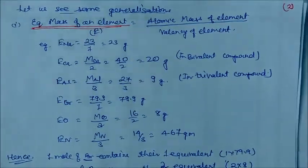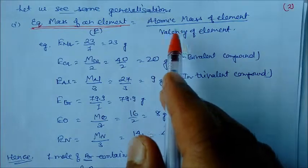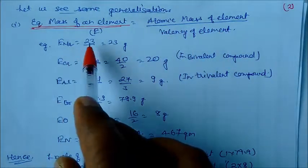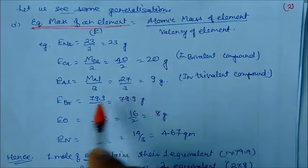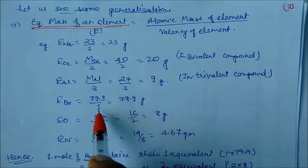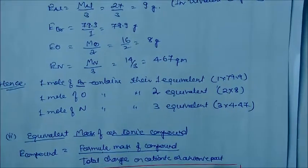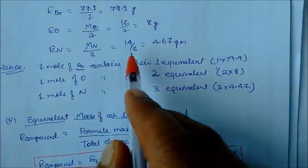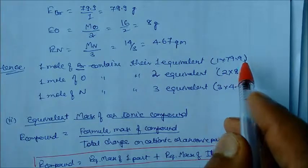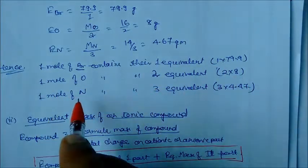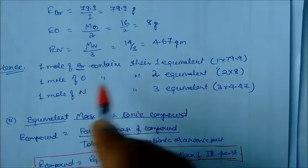For equivalent mass of elements: Bromine has molecular mass 79.9 with valency 1, so equivalent mass is 79.9 grams. Oxygen is 16/2 = 8 grams. Nitrogen is 14/3 = 4.67 grams. One mole of Bromine contains 1 equivalent (1 × 79.9). Oxygen contains 2 equivalents (2 × 8). Nitrogen contains 3 equivalents (3 × 4.67). These are the number of equivalents for bromine, oxygen, and nitrogen respectively.